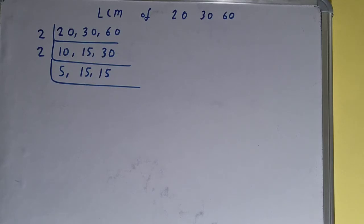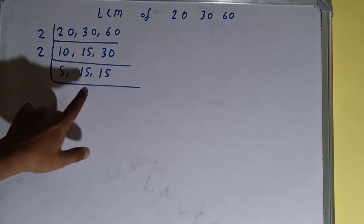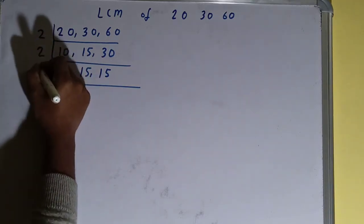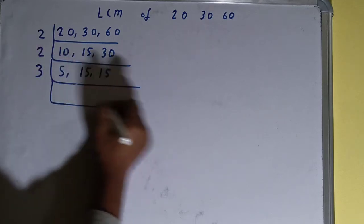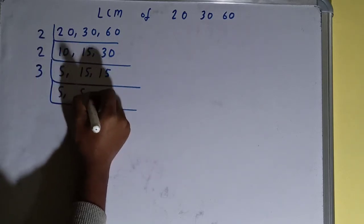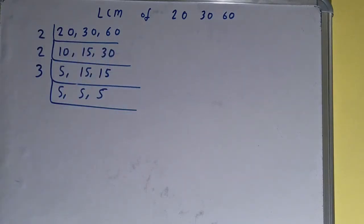Now again if we check, is any of the number divisible by 2, then none of the numbers are, so we'll go to the next prime number, that is 3. And with 3, the second and the third number is divisible, so we'll divide and we'll be having 5, 5, 5.